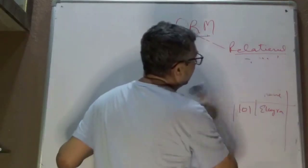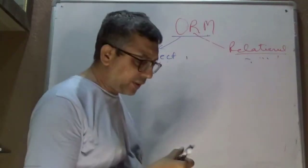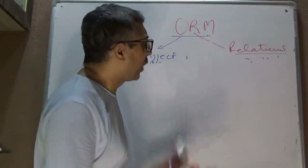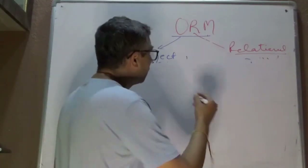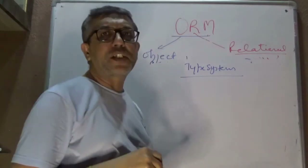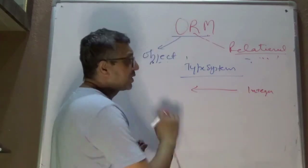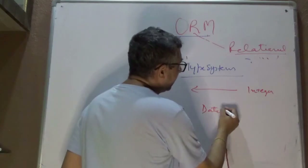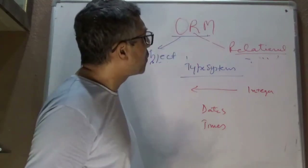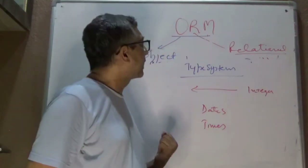Let's briefly talk about type systems. On the relational side you have types like int and integer — how they map to types on the object side. The same goes with dates and times. Some ORM frameworks also give the capability to define custom types that can be mapped accordingly on the relational database side.